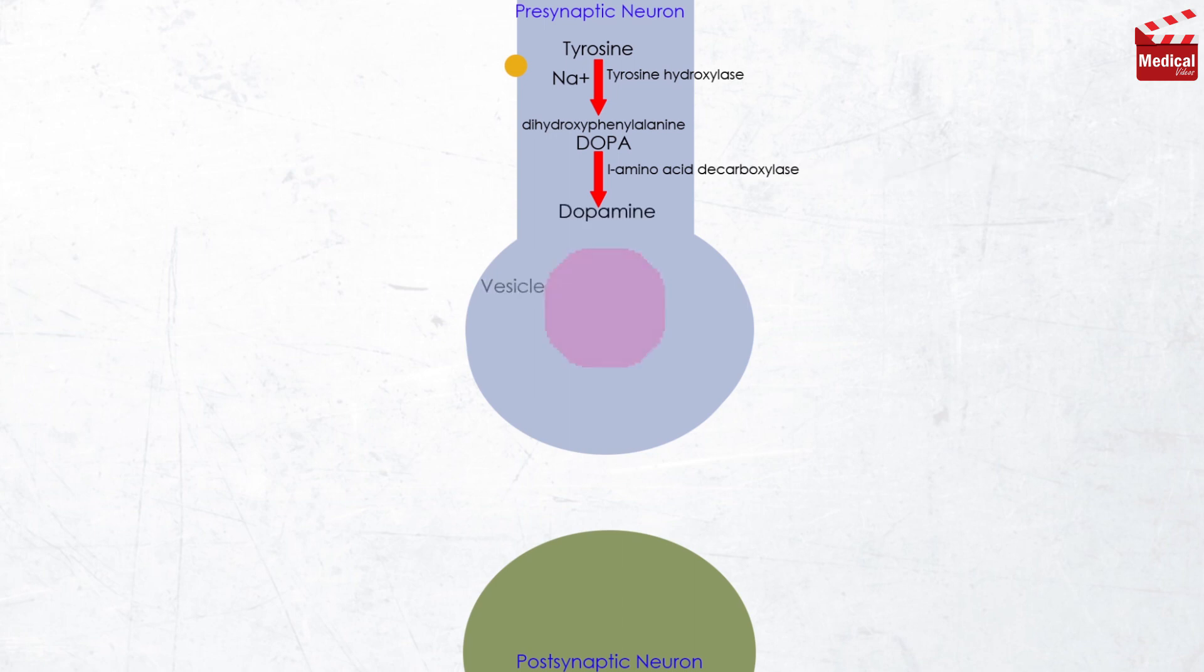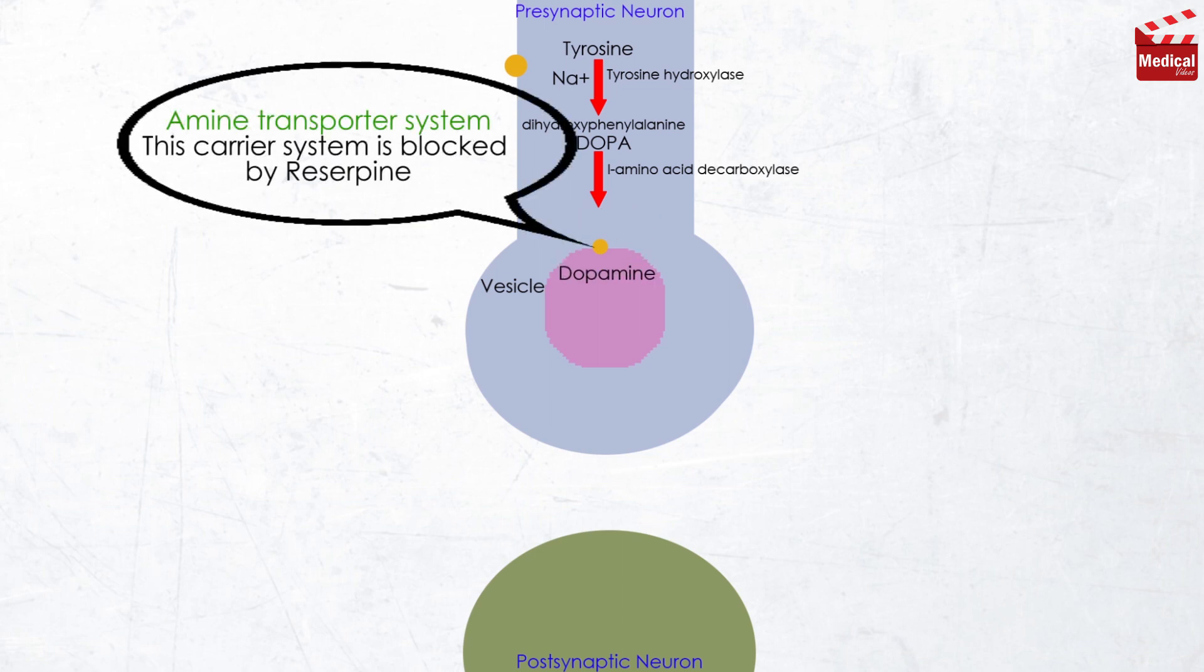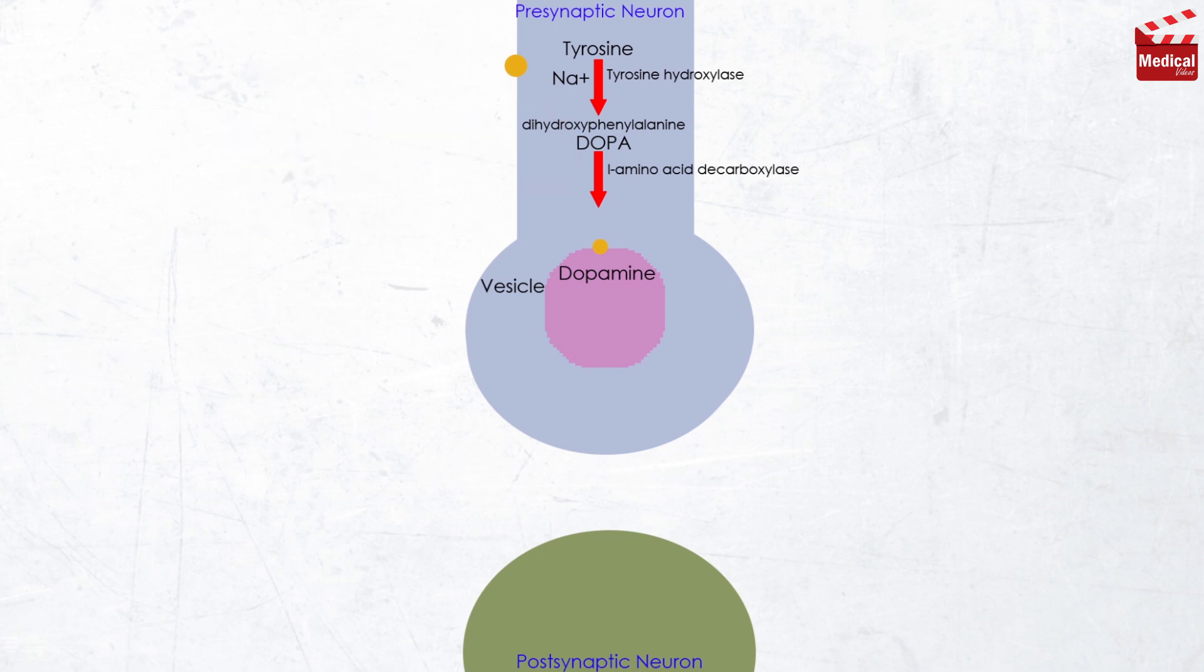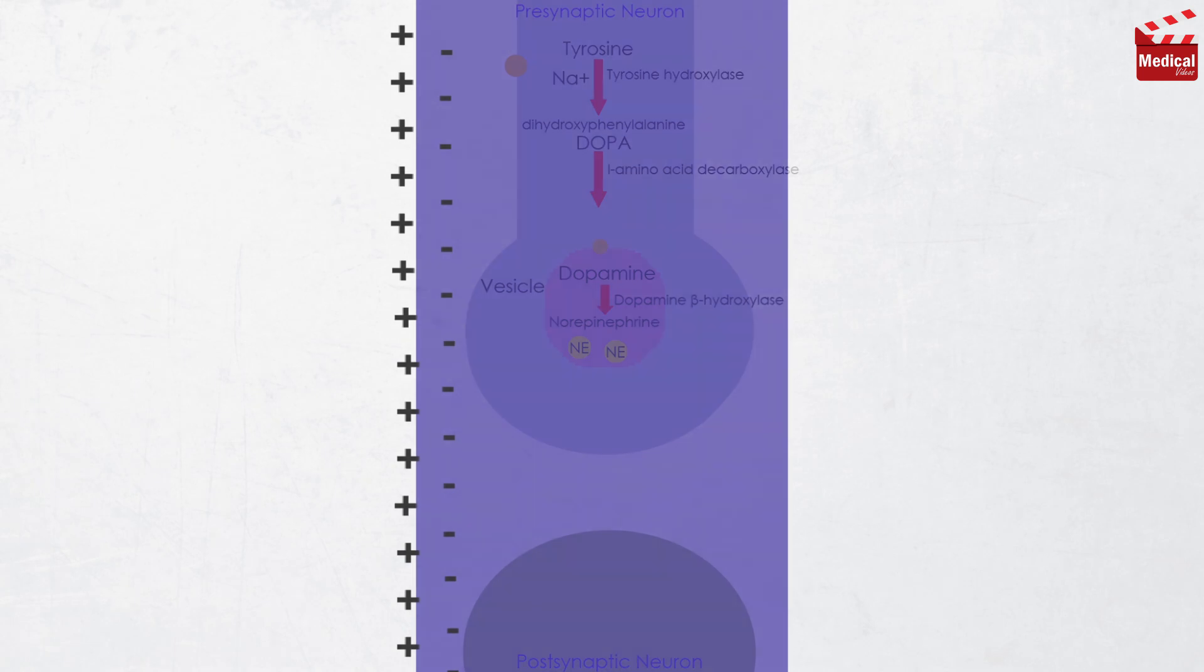Then dopamine is transported into synaptic vesicles by an amine transporter system. This carrier system is blocked by reserpine, which we'll discuss later. Dopamine is next hydroxylated to form norepinephrine by the enzyme dopamine beta-hydroxylase.